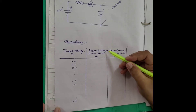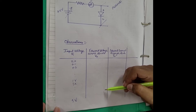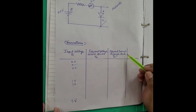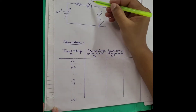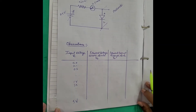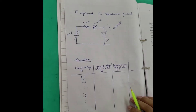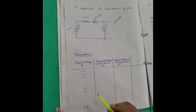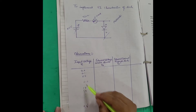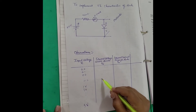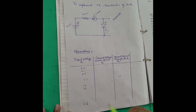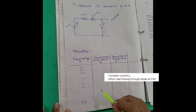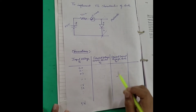The observation readings we will be taking are: forward voltage across the diode from the multimeter, and forward current through the diode from the milli ammeter. The key noticeable point is that we will be observing that at around 0.6 volt we start getting current through the diode. Let us see this in practical.